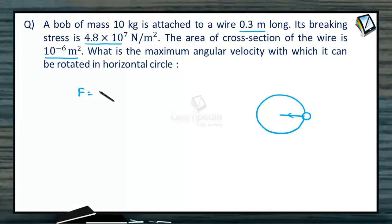So when the body is rotated in a horizontal circle, remember the centripetal force will be F equals mRω².